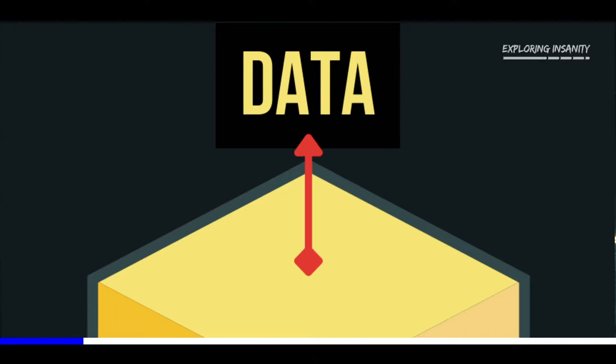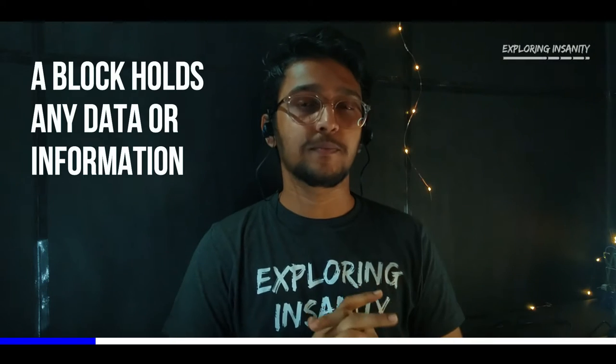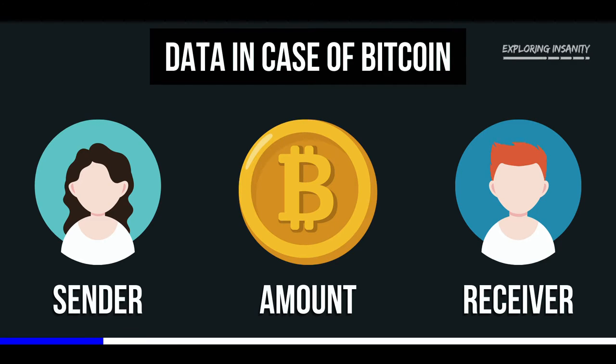Whenever data is recorded in a blockchain, it becomes difficult to change. To understand this, let's understand what is a block. A block contains data or information which depends upon the type of block. In case of Bitcoin, this data will be the sender or receiver's information and the transaction amount.